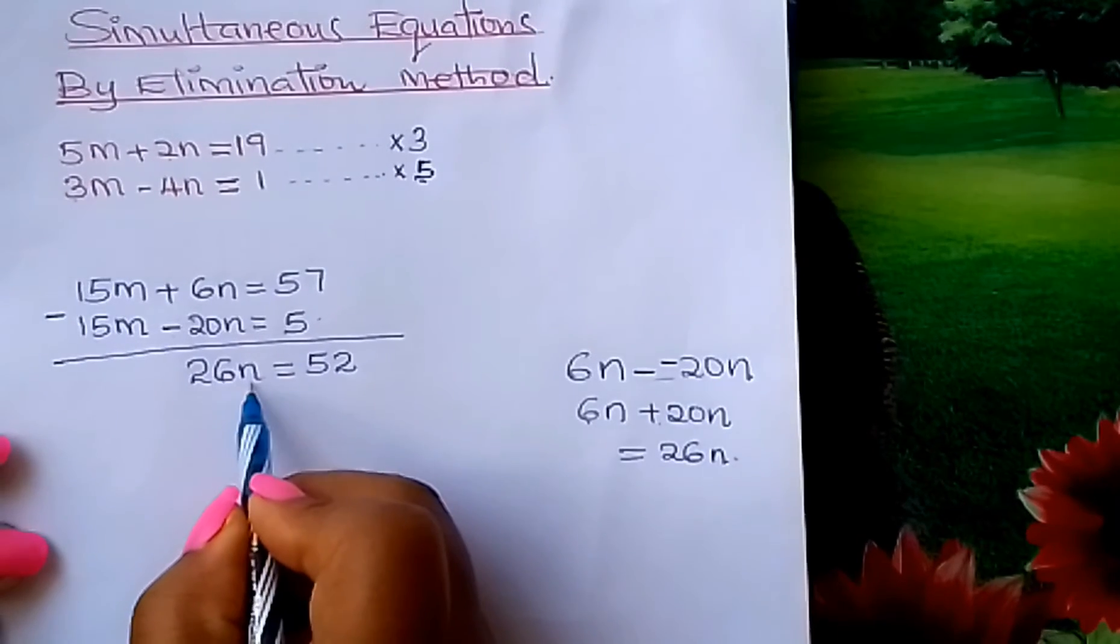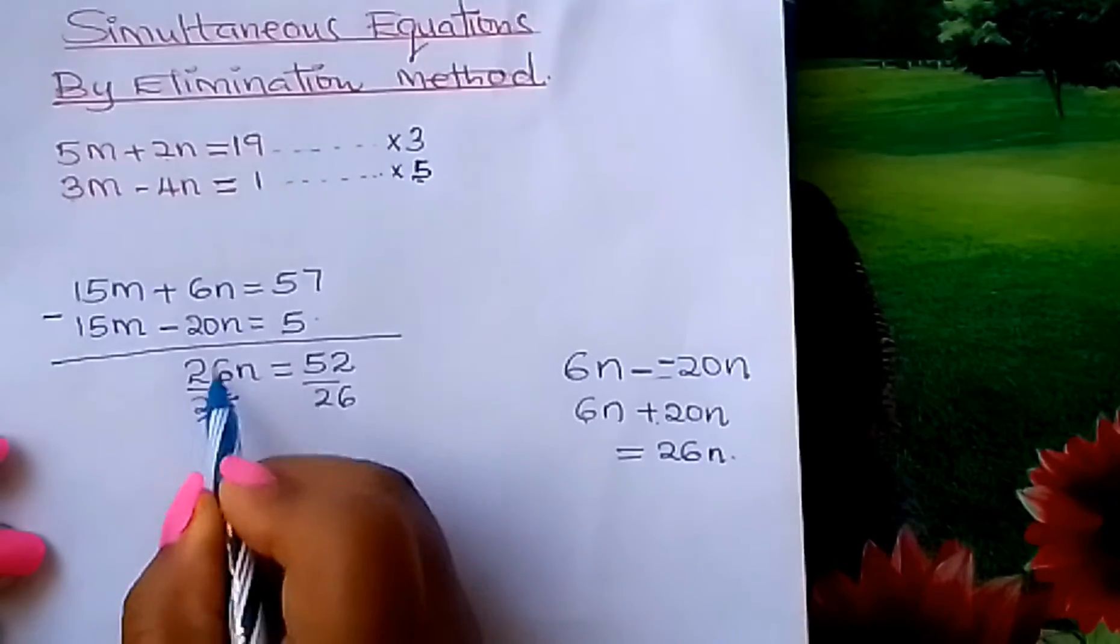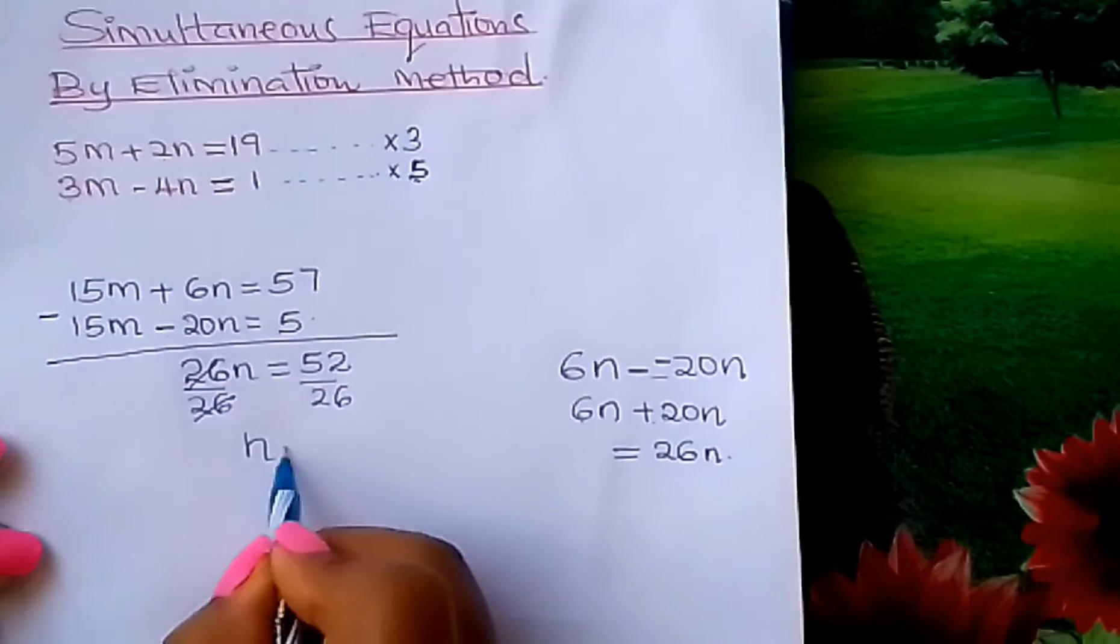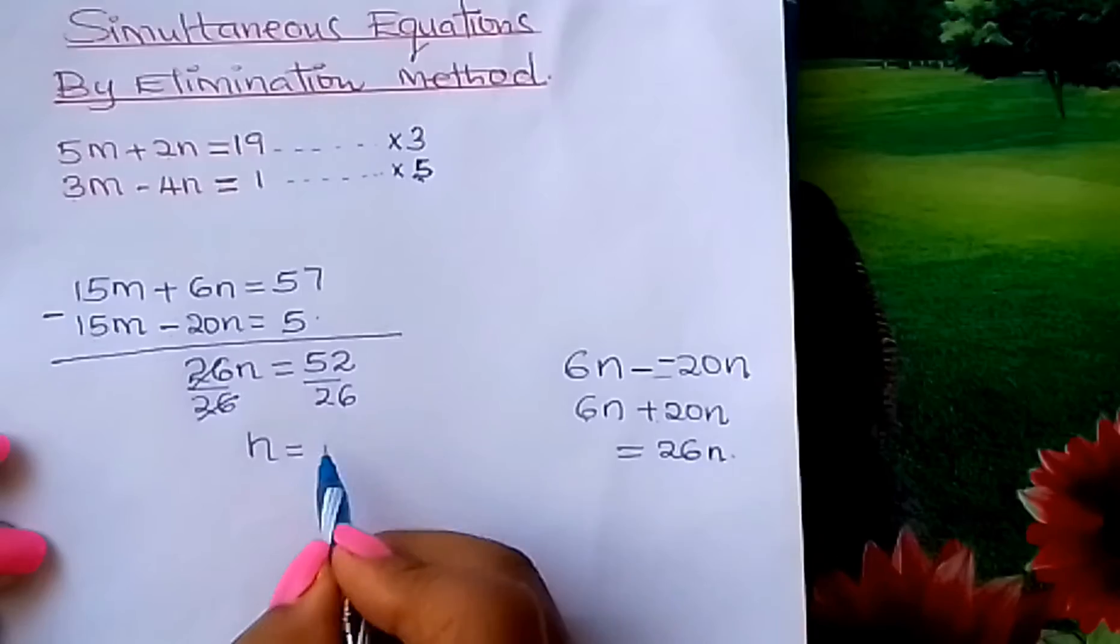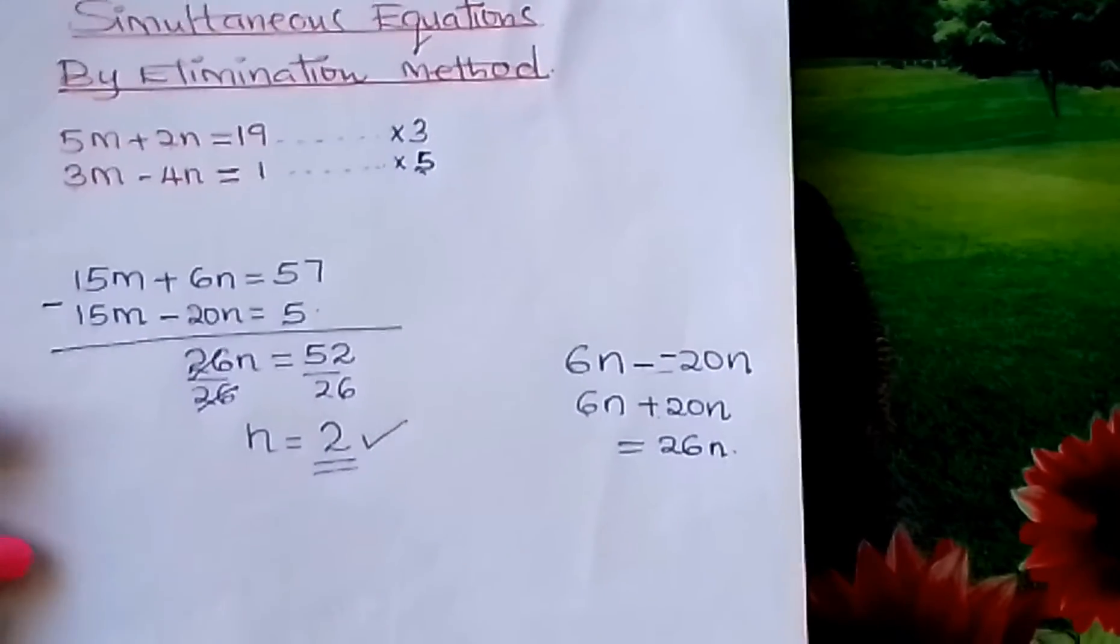From there, how do we get N? Divide both sides by 26. So your N is what? This divided by this gives us 2. And so the value of N is 2.